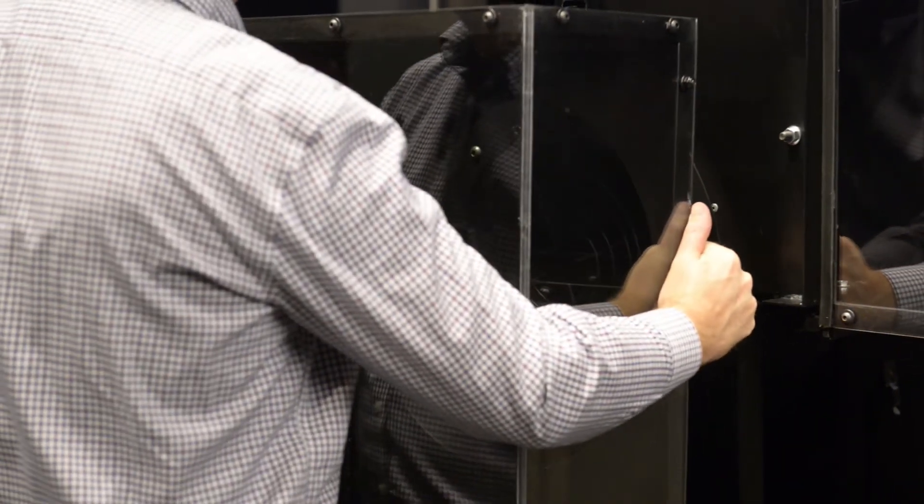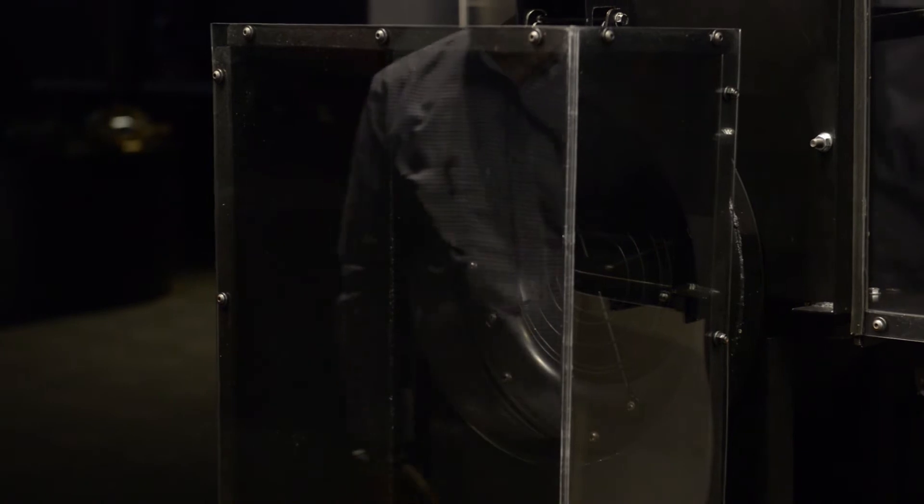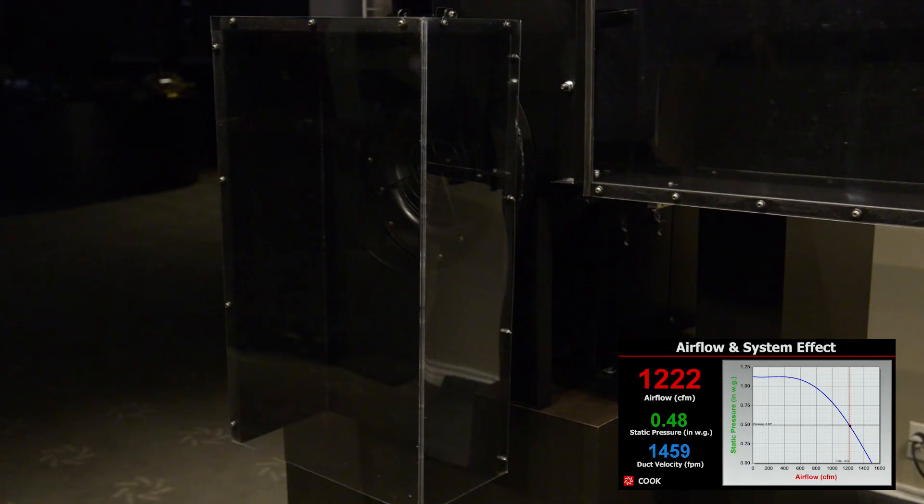When space is really tight, you will see the box and tap fitting mounted directly on the fan inlet. Simply moving the fitting 30 inches closer to the fan, we have increased the pressure loss of the fitting from 0.1 to 0.5 inches water gauge. You have heard of the term system effect. This is a great example. Simply moving the fitting closer to the fan has dramatically increased the pressure loss and dropped the airflow 20%. To what do we attribute this difference?